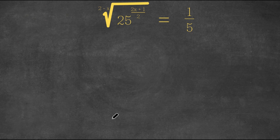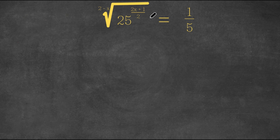Welcome back to Click Academics. In today's video, I'm going to be teaching you guys how to solve this exponential equation. We have 25 to the power of 2x plus 1, over the 2 minus x root, equals 1 over 5.